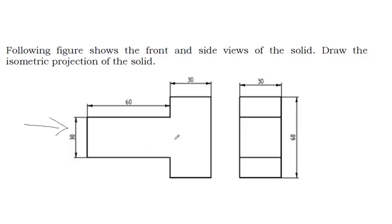The same thing is visible here also. The left side of the object we are representing on the right side. This is the vertical surface — the vertical edge remains vertical itself, and horizontal edges are going to be inclined to 30 degrees.